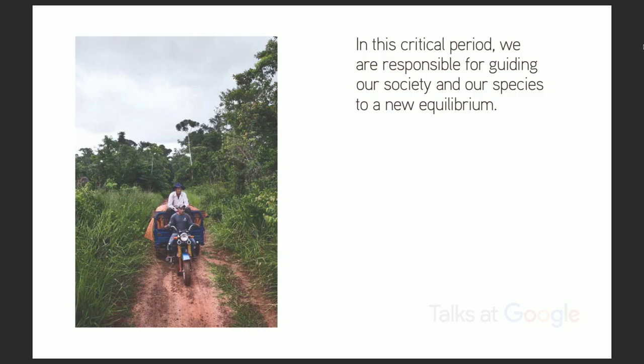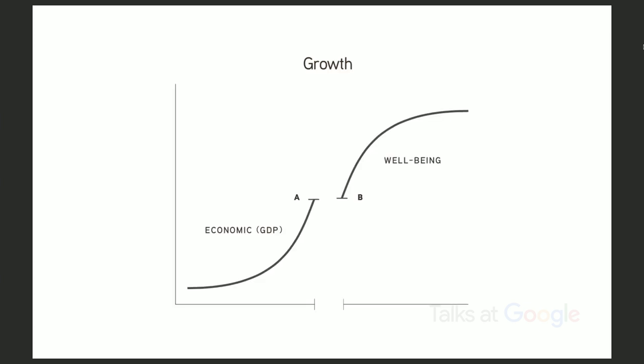In this critical period, we're responsible for guiding our species to a new equilibrium. What this means is that parameters for growth — how we measure growth and progress — need to shift from a quantitative view, looking at GDP and measuring by economic growth. If you look at the long term, we can't keep growing forever. So we need ways of measuring progress that aren't purely quantitative, or we need to quantify issues of human and planetary well-being. If those become the values and the measures, we can continue to progress and go forward — but it requires a huge shift in systemic and individual thinking.